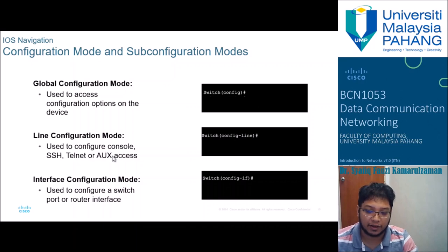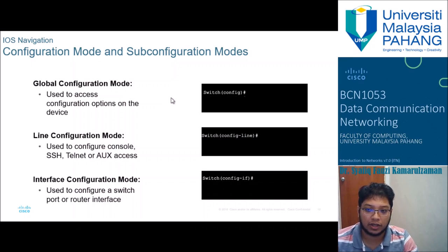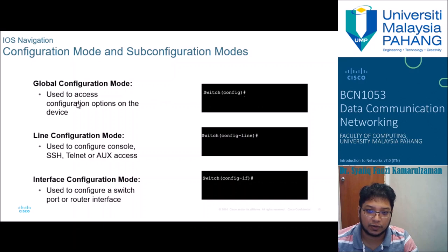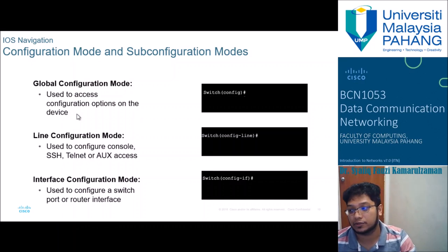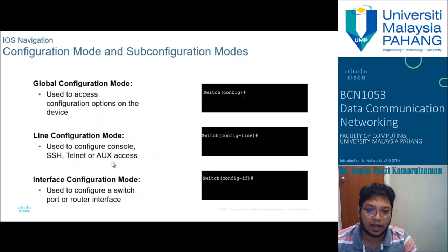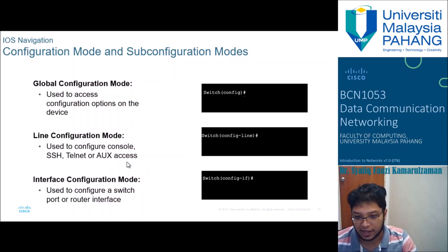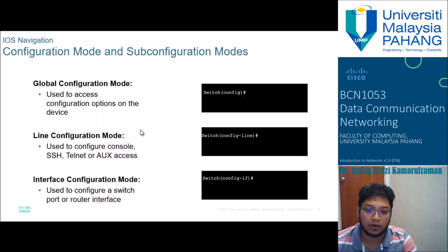Once you enter a device, you can start configuring it. There are three configuration sub-modes: global configuration mode, used to access configuration options of the device including names and passwords; line configuration mode, used to configure console, SSH, telnet, or AUX; and interface configuration mode, used to configure a switch port or router interface.